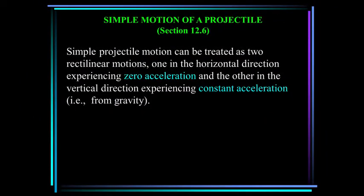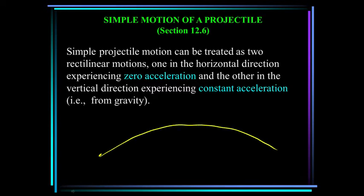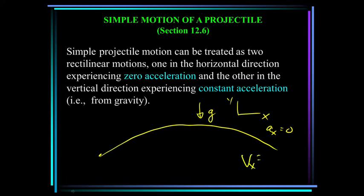Remember Section 12.2 when we talked about rectilinear motions? Simple projectile motion can be treated as two rectilinear motions: one in the horizontal direction that has zero acceleration, and the other in the vertical direction, which experiences constant acceleration due to the gravity of the Earth. If we neglect air resistance, the acceleration in the x direction is zero, meaning the velocity in the x direction is constant.